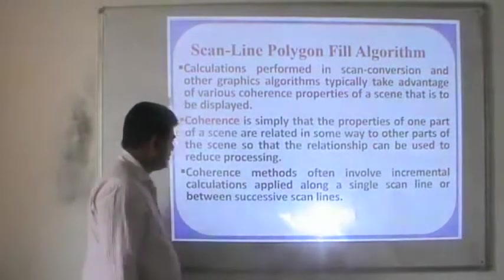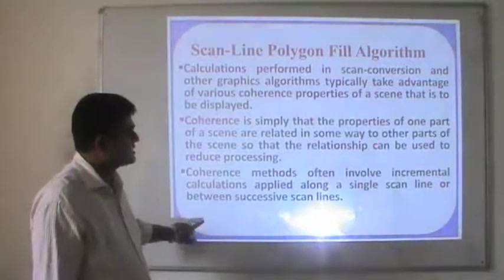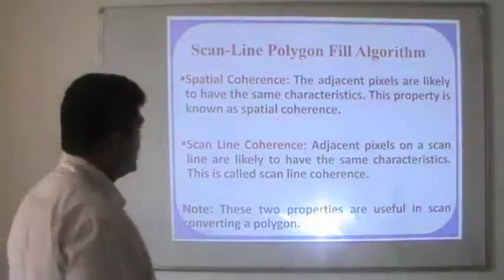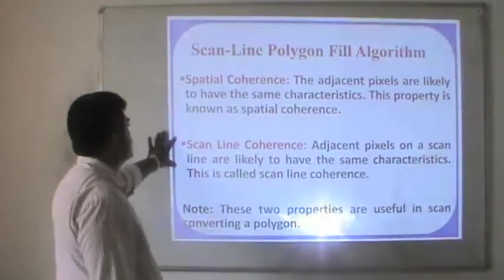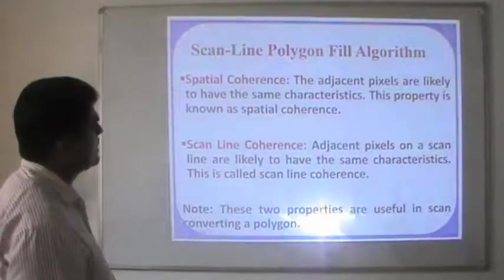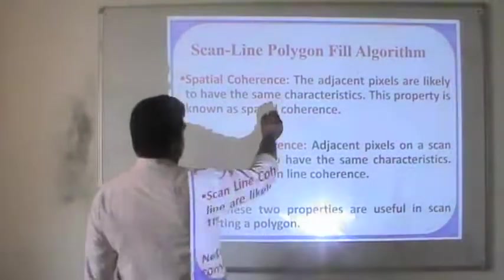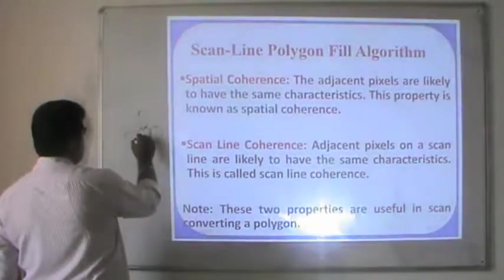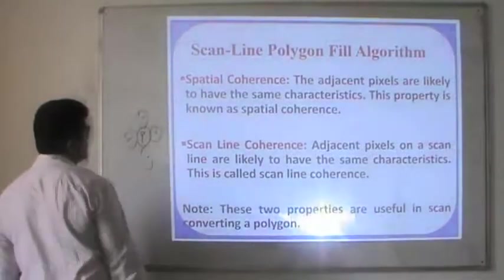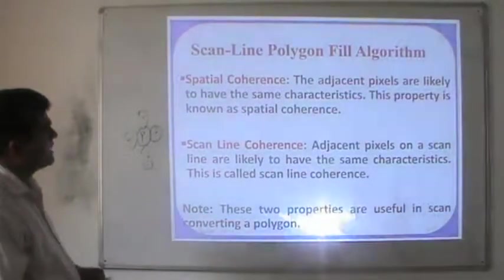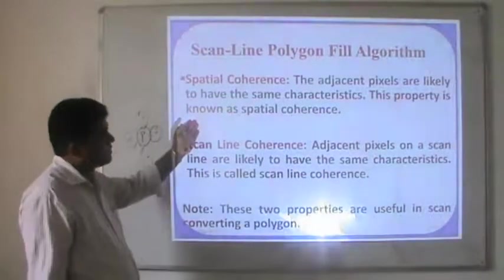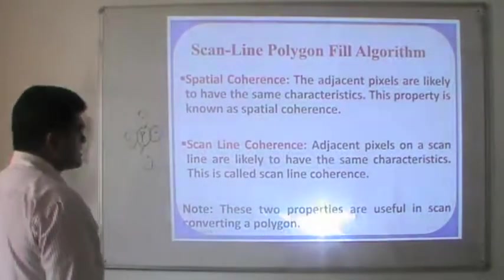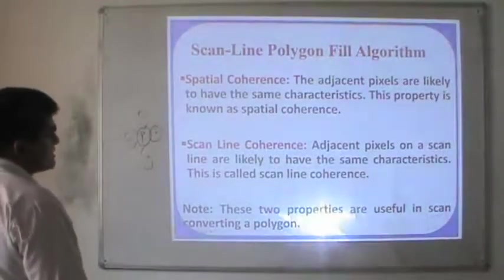Coherence calculations often involve incremental calculations applied along a single line or between successive lines. There are two types of coherence. Spatial coherence means adjacent pixels are likely to have the same characteristics and properties. Scanline coherence means adjacent pixels on the scanline are likely to have the same characteristics — as we have seen in the previous diagram, points lying on the same scanline will have the same properties.